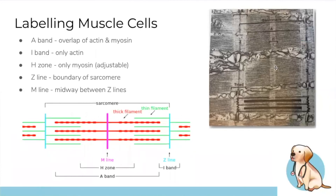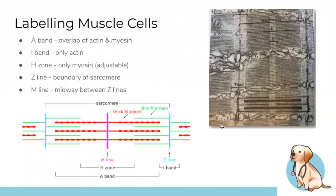Sarcomere histology: the A-band is where actin and myosin overlap; the I-band is actin only; the H-zone is myosin only (thick filaments); the Z-line marks the boundary between sarcomere units; and the M-line is the midpoint between two Z-lines. The thick filaments are myosin; the thin ones are actin. One sarcomere unit runs from one Z-line to the next.